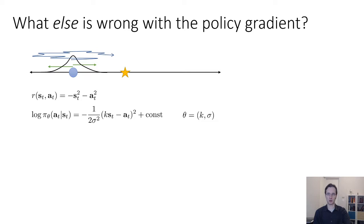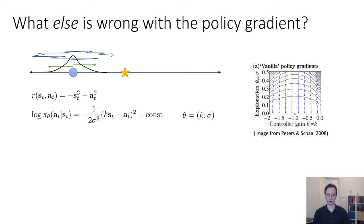Now the convenient thing with having a two-dimensional parameter space is that we can actually visualize the entire vector field corresponding to the gradient at all locations in the parameter space. This figure is borrowed from an excellent paper by Peters and Schaal. The little blue arrow here shows the gradient, normalized to be unit length. The horizontal axis is the first parameter, k, and the vertical axis is the second parameter, sigma. The optimal setting for the parameters is k equals negative one and sigma equals zero. But one of the things you might notice from looking at this plot is that the arrows don't actually point towards the optimum.